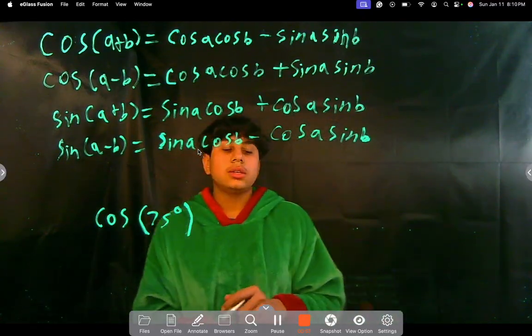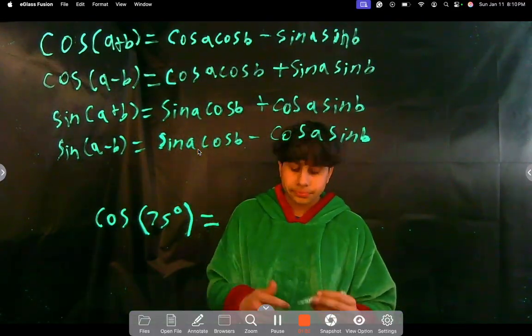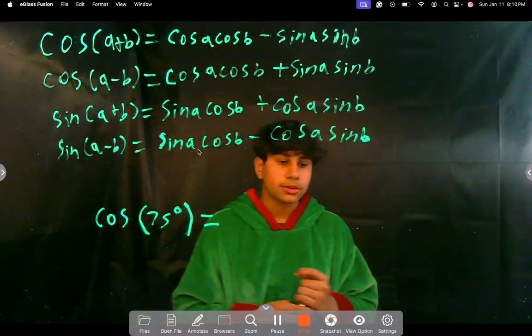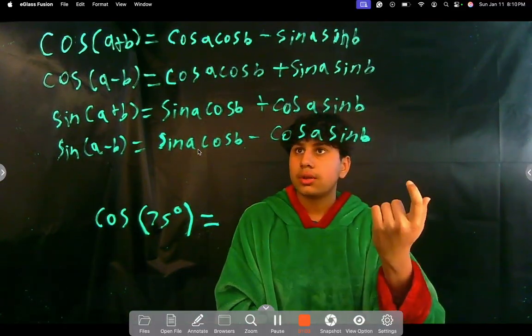So, let's just dive into this example for now. Alright, so, cosine of 75 degrees. Well, how can we rewrite 75 degrees using the values that we know so far? Well, if you think about it.